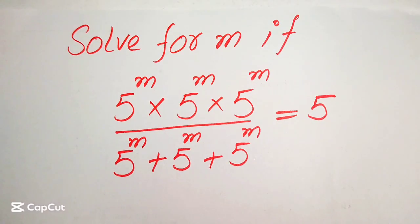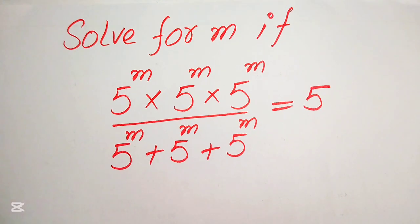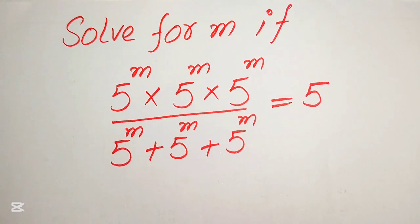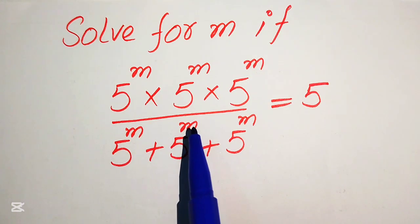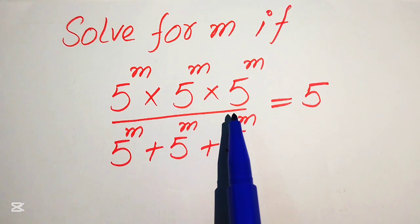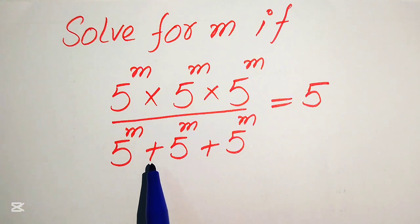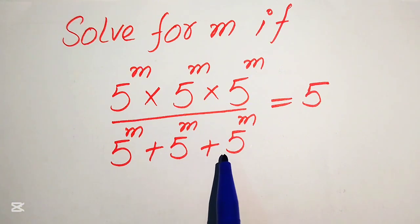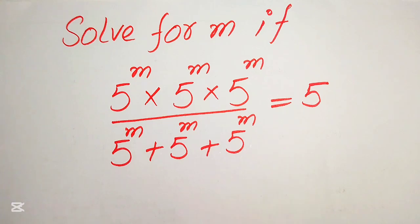Hello everyone, welcome to solve this nice math algebra problem. Here we have 5 to the power of m multiplied by 5 to the power of m multiplied by 5 to the power of m, divided by 5 to the power of m plus 5 to the power of m plus 5 to the power of m, and this equals 5.